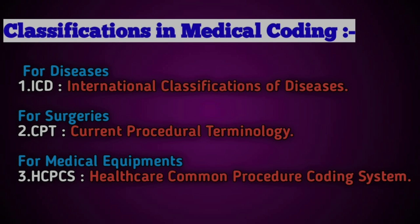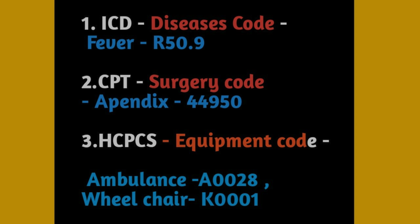The second book is CPT — Current Procedural Terminology. CPT is used for procedures and surgeries. For example, an appendix removal surgery called appendectomy has the CPT code 44950 or 44960. So when a patient undergoes appendectomy, the doctor uses this universal CPT code.